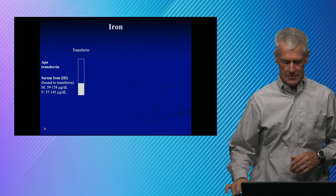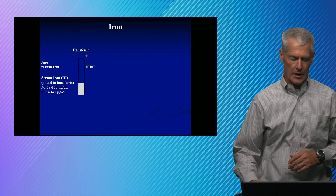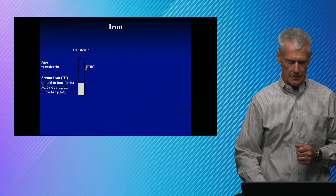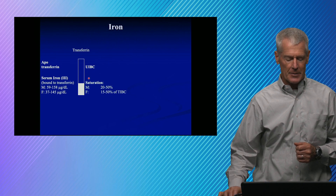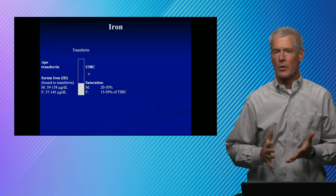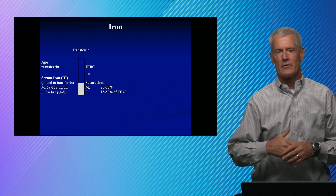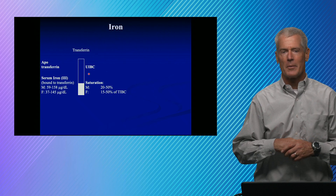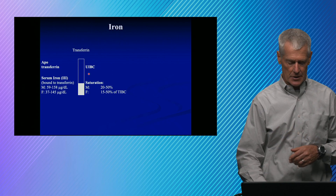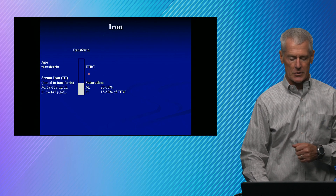People talk about apotransferrin — that's basically the part of transferrin that doesn't have any iron bound to it. We also call that unsaturated iron binding capacity, UIBC. The saturation of transferrin is also important, and it's somewhere in the 20 to 50 percent range. If you exceed 50 — if you're in the 60 to 70 range — you probably have hemochromatosis, which is iron overload with tissue damage. Percent saturation is typically in the 20 to 50 percent range.